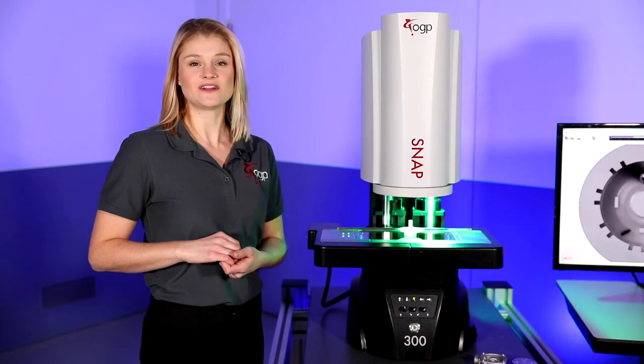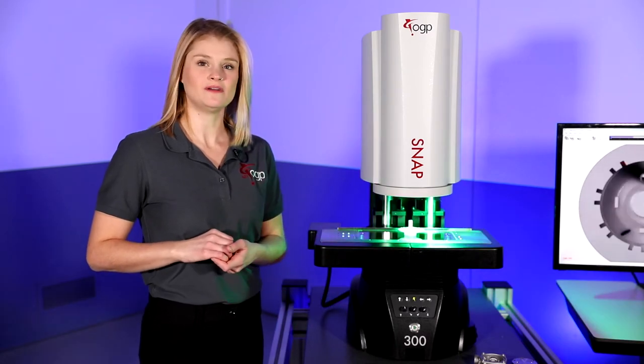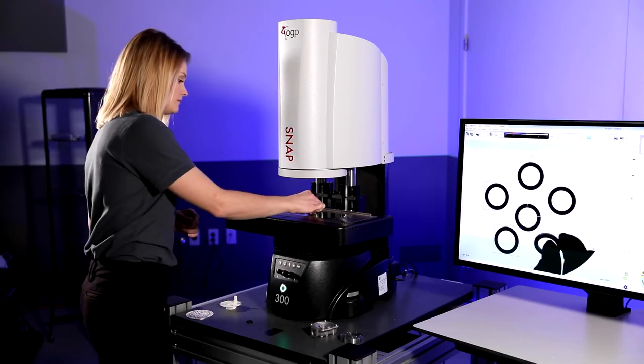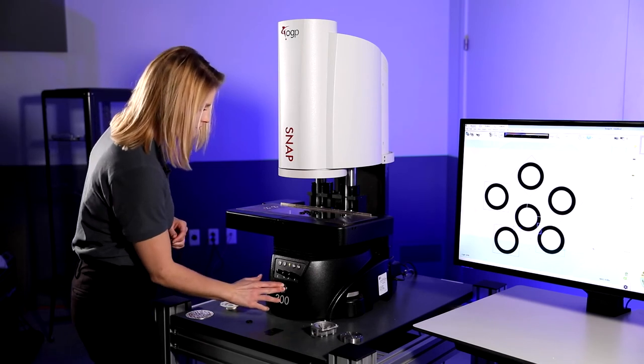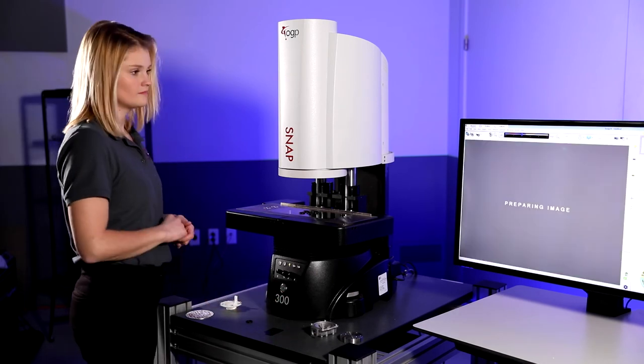All SNAP systems are easy to use and make measurements simple. Simply place the parts on the stage and click the go button. SNAP scans the stage and identifies all visible parts.